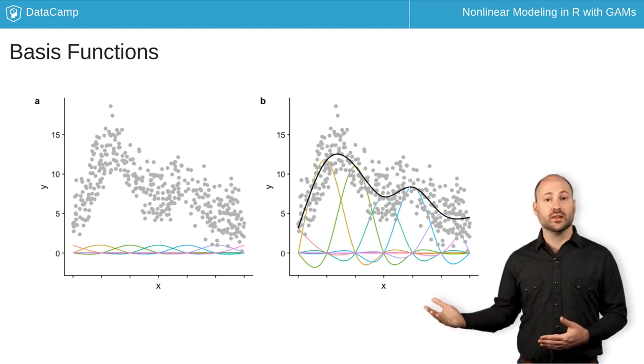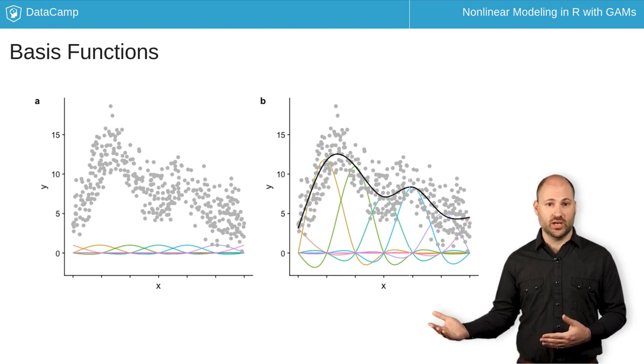In the plot here on the left, we show the basis functions of a GAM where all the coefficients are the same. On the right, we show the same basis functions after model fitting, where each has a coefficient fit to the data. You can see how these basis functions add up to create the overall smooth shape.